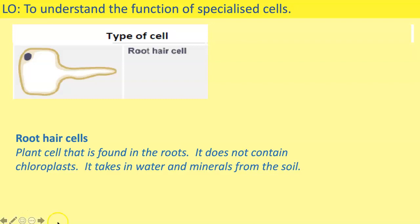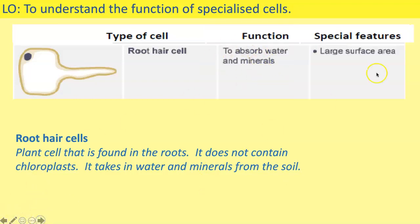The next type of cell is a root hair cell — a plant cell found in the roots. It does not contain chloroplasts because it is in the ground where no light can reach, so photosynthesis cannot take place and these cells do not need chloroplasts. These cells take in water and minerals from the soil. Their function is to absorb water and minerals, and their specialised feature is a large surface area, meaning more water and minerals can be absorbed into the plant. Make your card sort, cut it out, and put it to one side.